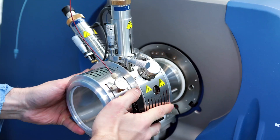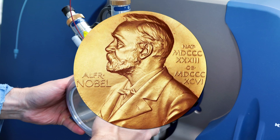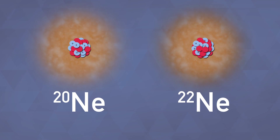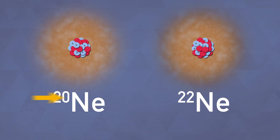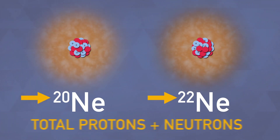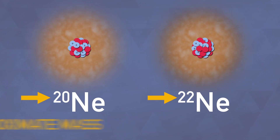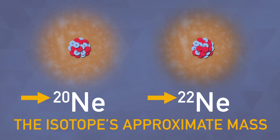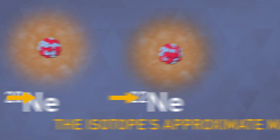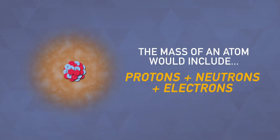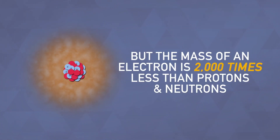The mass spectrometer is now used in labs all over the world, and Aston won the 1922 Nobel Prize in chemistry for his work. These are the isotopes of neon that Thompson and Aston saw. The numbers you see here tell you the total number of protons plus neutrons in each atom, and they also tell you the isotopes' approximate mass. Technically, the mass of an atom would include protons, neutrons, and electrons.